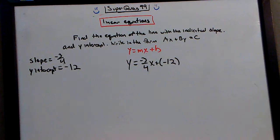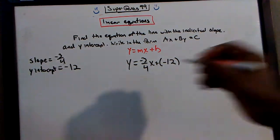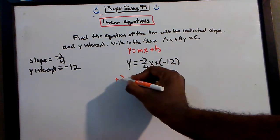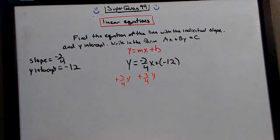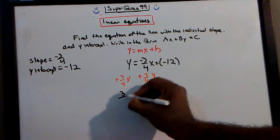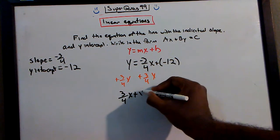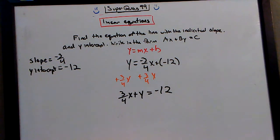And we would properly do that by adding 3 fourths x to both sides. So that gives us 3 fourths x plus y equals negative 12. And then how do we get rid of the fraction here? I'm going to multiply everything by 4.